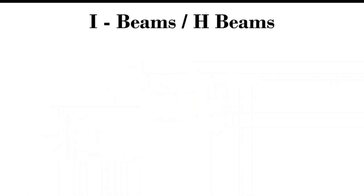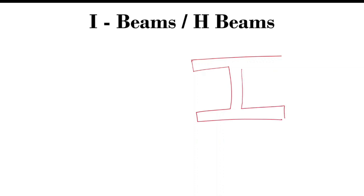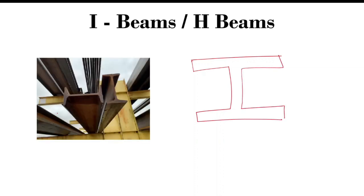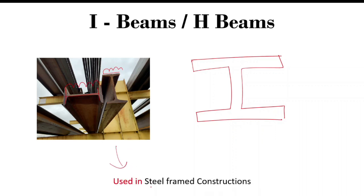I-beams: the cross-section resembles the letter I or H, so we can call it an H-beam or I-beam. The basic characteristic of I-beams is that they are very efficient in resisting bending moments due to their particular shape. I-shaped beams are commonly used in steel frame constructions.